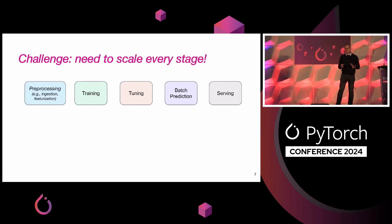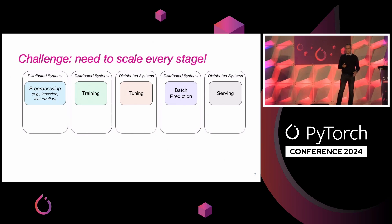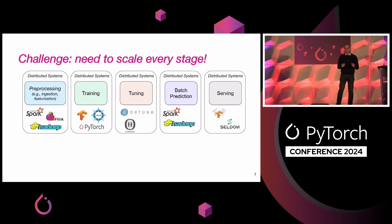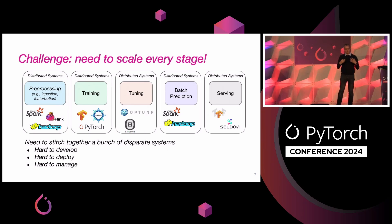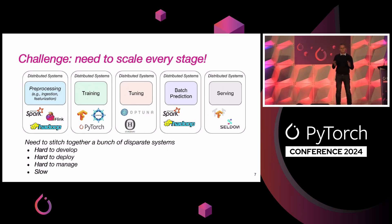So what is the problem? The problem, like I mentioned, is you need to scale these pipelines — each of these stages. While you have good systems to scale each stage, to scale the entire pipeline you need to stitch together these systems. This is where the problem occurs. First, it is hard to develop because each system has its own API. Second, it's hard to deploy and manage because each system has different configuration parameters, different failure semantics, consistency semantics, and so forth. And finally, it's also slow because if you move data between the stages, typically you have to store and read from a blob store.